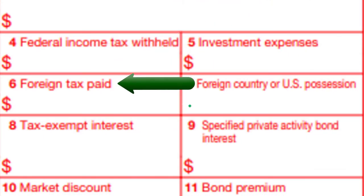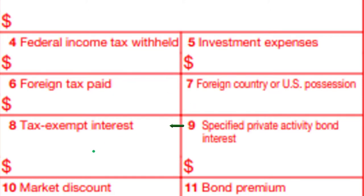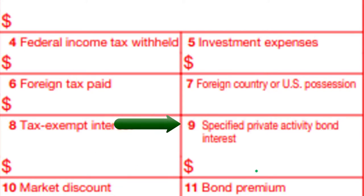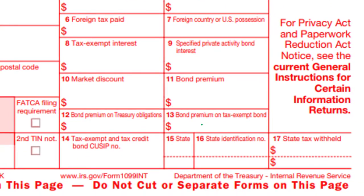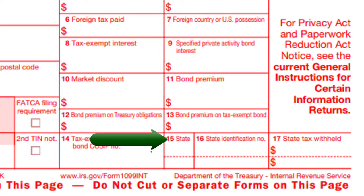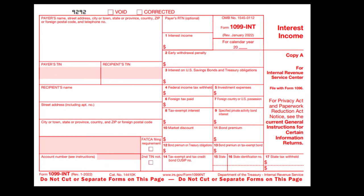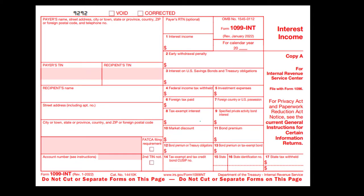Box 6 is foreign tax paid if applicable, and Box 7 is foreign country or U.S. possession. Box 8 is tax-exempt interest — if you have tax-exempt interest, you still need to report it in box 8 even though it may be exempt. There's also box 9 for special private activity bond interest, box 10 for market discount, bond premium, bond premium on treasury obligations, bond premium on tax-exempt bonds, and tax-exempt and tax credit information, along with state information.